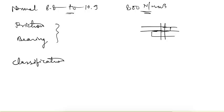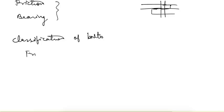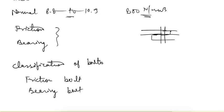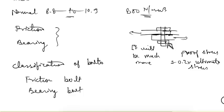Bolts can also be classified as friction bolts or bearing bolts. In a friction bolt — like the HSFG bolt — the bolt is stressed up to its proof stress, which equals 0.7 times the ultimate stress. This creates a strong grip between the plates. When a force is applied, the friction developed between the plates resists it, so bearing and shearing action of the bolt do not come into picture.